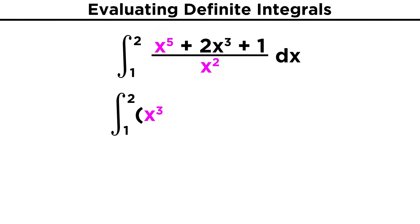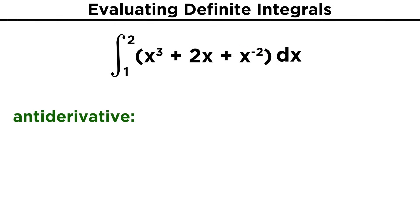For x⁵, that gives us x³. For 2x³, that gives us 2x. And for one, that gives us one over x². But let's remember our rules of exponents and instead express this as x^(-2). That will allow us to more easily find the antiderivative.